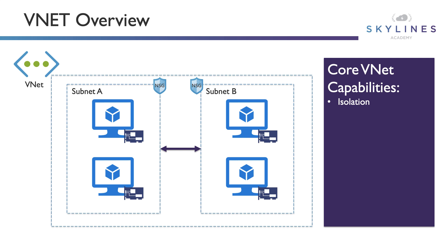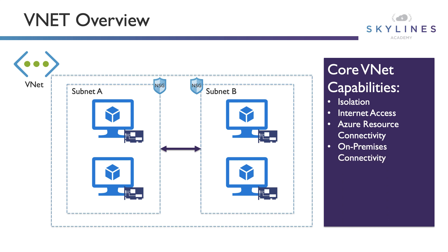They are also a security boundary from that perspective. They provide internet access out, and you can also provide internet access in through public IP addresses as well. Azure resource connectivity allows connectivity through all Azure resources — when you build virtual machines, storage, and things like that, you can connect them into the VNets themselves. They provide on-premise connectivity through the various mechanisms available in hybrid connectivity scenarios. They also have the traffic filter capability through things like network security groups, routing capabilities with default route behavior built in, and user defined routing capabilities as well. And you can connect virtual networks together.